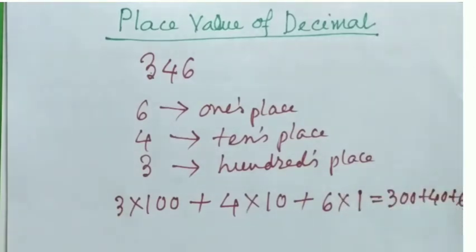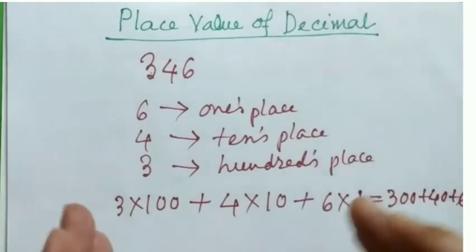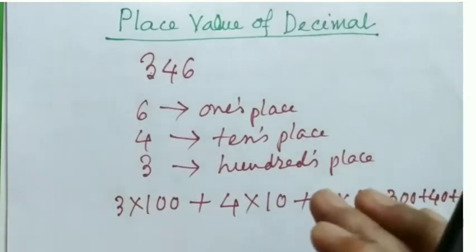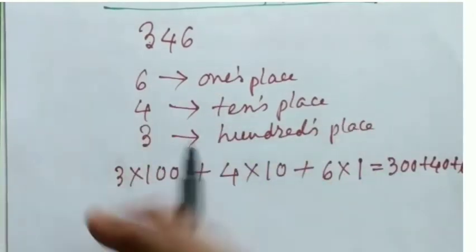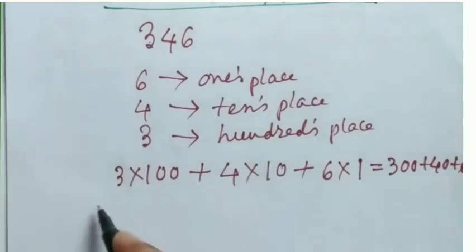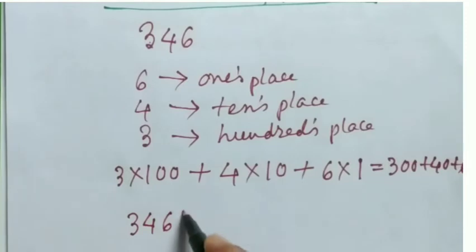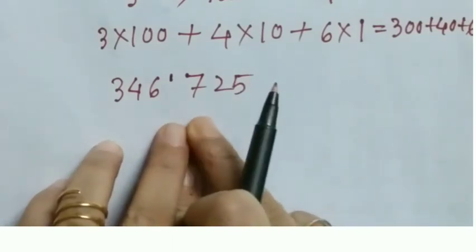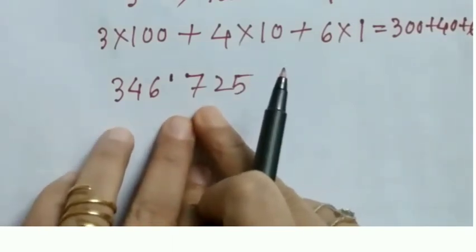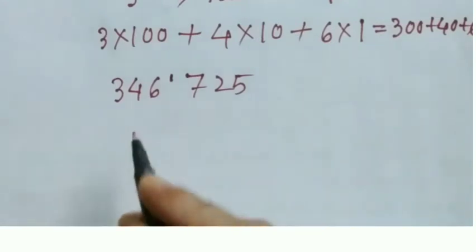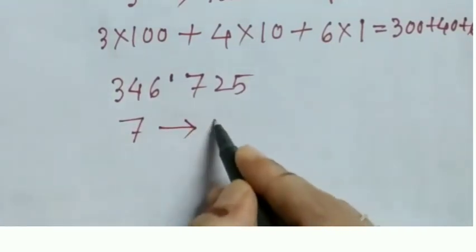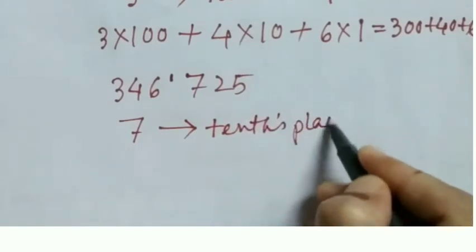Now, how can we get the place value of a number having a decimal part? Once we have a decimal point, we will have a part which is after the decimal point. Suppose I take the number 346.725. Here, 7 is the first digit after the decimal point and this is called the tenths place.